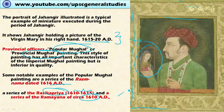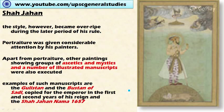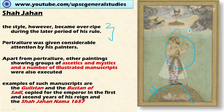Under Shah Jahan, the style became overripe — meaning there was a certain decline in the latter period. Portraiture was given considerable attention; notably, a painting shows Shah Jahan standing on a globe. Apart from portraiture, other paintings show groups of ascetic mystics and a number of illustrated manuscripts. Examples include Gullistan and Bustan of Sadi, copied in the first and second years of his reign, and the Shah Jahan Nama (1657).